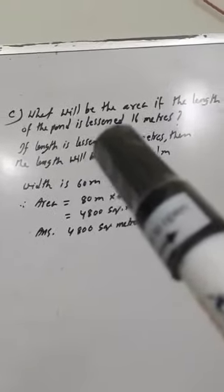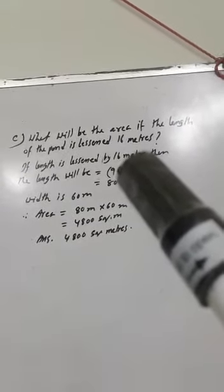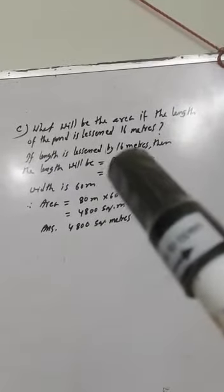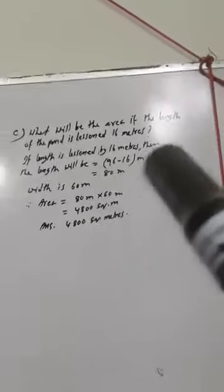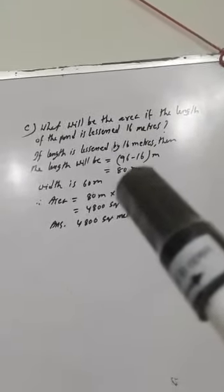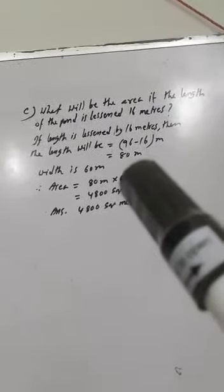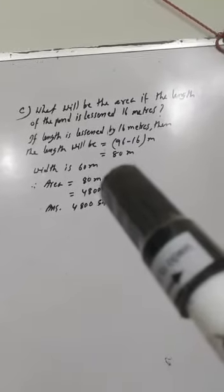What will be the area of the pond if the length is less than 16 meters? If the length of the pond is reduced by 16 meters, what will the area be? The length is 96 meters; if 16 meters is subtracted, it will be 80 meters. 96 minus 16 equals 80 meters, and the width is given as 60 meters.